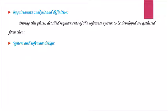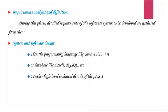Second phase is system and software design. Design activity results in the overall software architecture. Software design involves identifying and describing fundamental software system components and their relationships. The system design process assigns the requirements to either hardware or software components. Here can choose the programming language like Java, PHP, dotnet, or database like Oracle, MySQL, etc., or the high level technical details of the project.